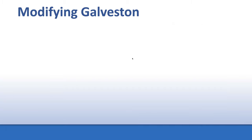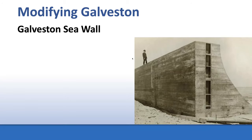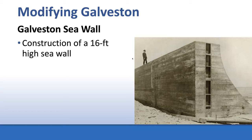The reason they raised buildings was because they built a seawall. The Galveston seawall is a 16-foot-high wall that protects the city from storm surge. The wall has a curved face on the water side so that when waves slam into it, they run right up the wall and shoot straight up into the air and back into the Gulf. The seawall was originally three miles long and was later extended to six miles.